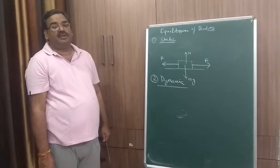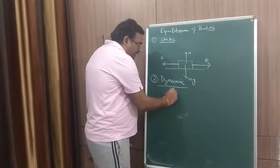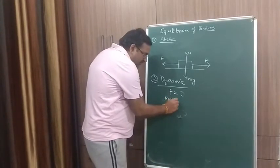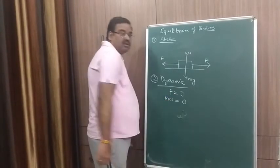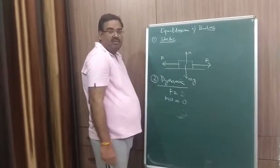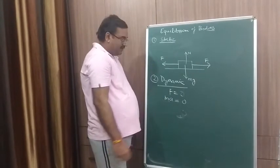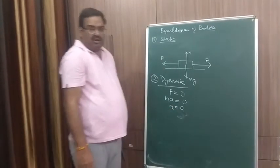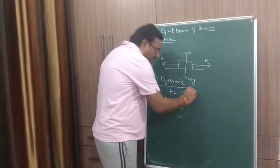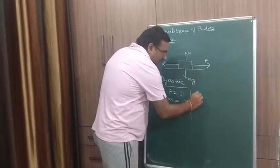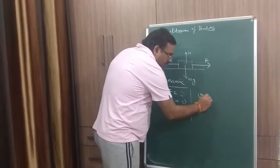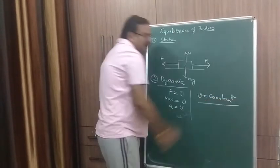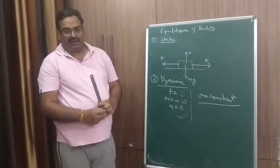We have already stated in the conditions for the equilibrium, force should be zero. Force should be equal to zero. And what is force? Force is equal to mass into acceleration. Should be equal to zero. Mass can never be zero. We know that mass can never be zero. Then what should be zero? Acceleration should be zero. So if a body moves continuously with constant velocity, then the body is said to be in dynamic equilibrium. Is it clear?